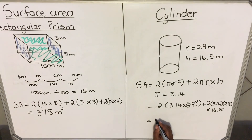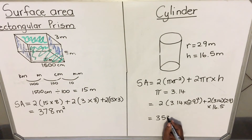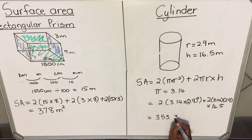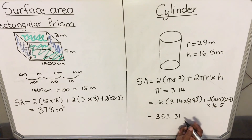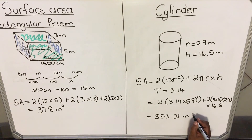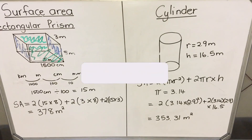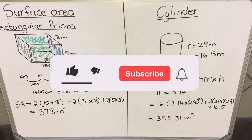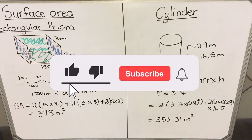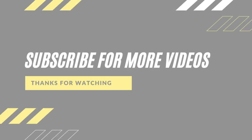Our answer is 353.31 meters squared. Because the unit was meters and it's a surface area, the unit is squared. This is how we calculate the surface area. This is the end of our lesson — thank you for watching.